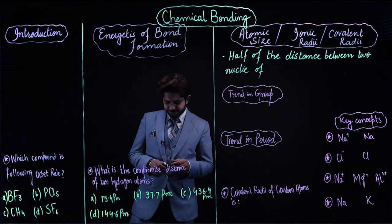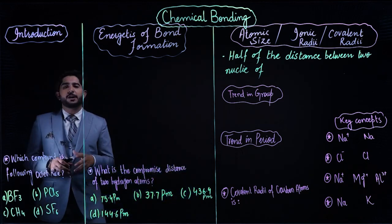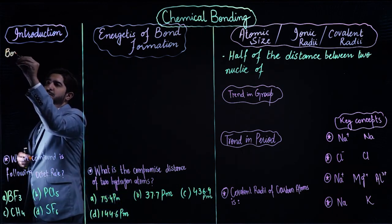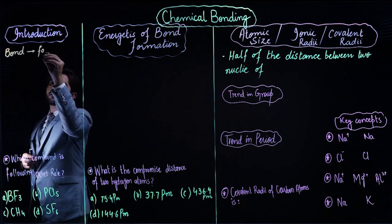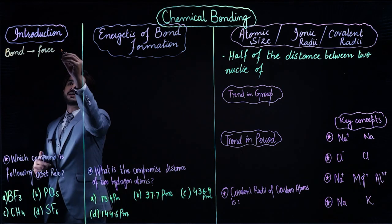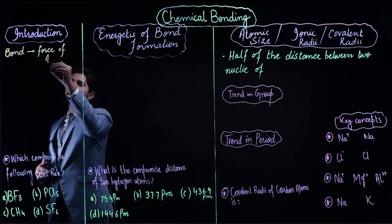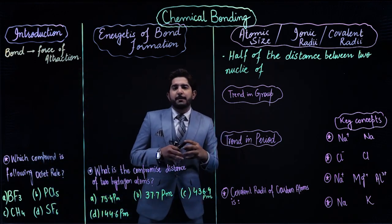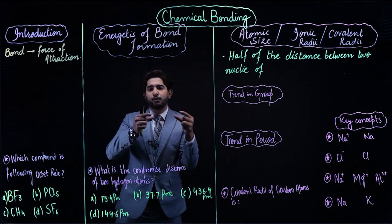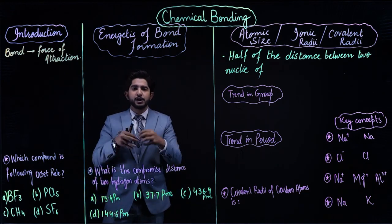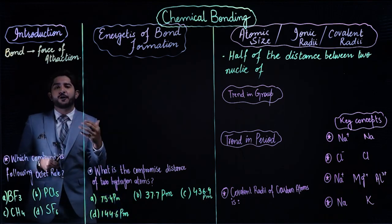Let's start with the introduction. Chemical bond — the word 'bond' means force. Chemical bond means chemical force, and that force is called a force of attraction. A chemical bond always forms between two atoms. It is a force of attraction that binds them together — that is called a chemical force, or chemical bond.